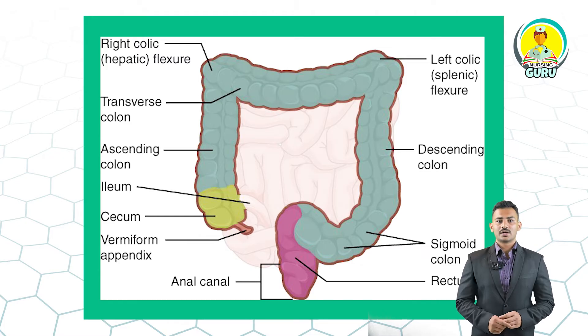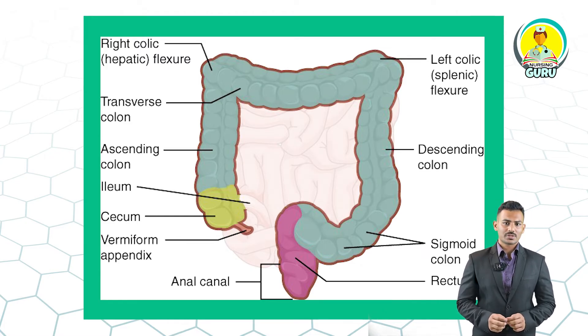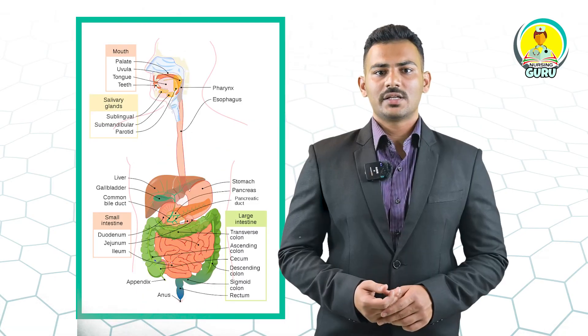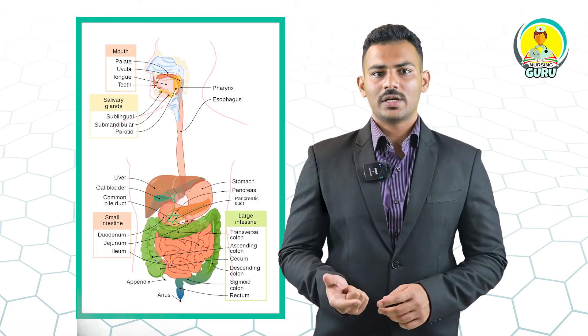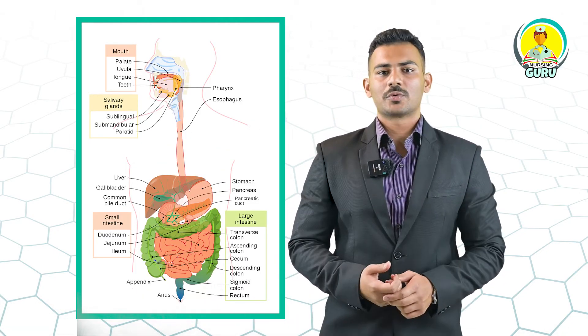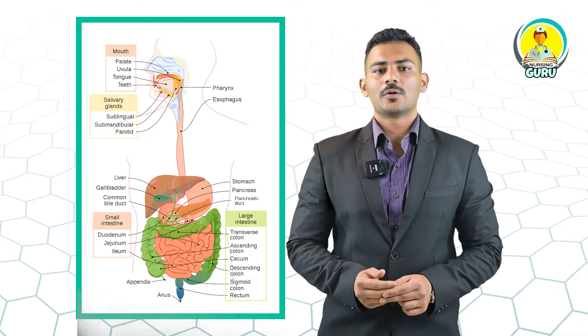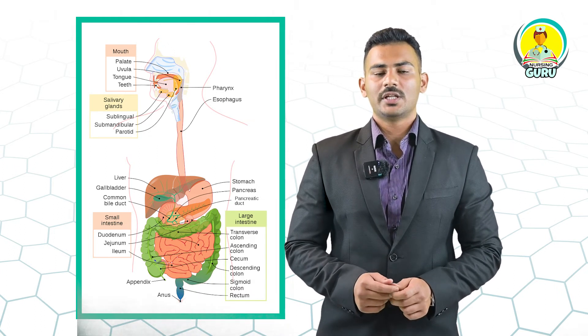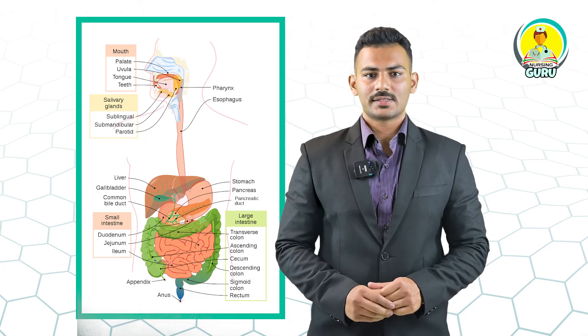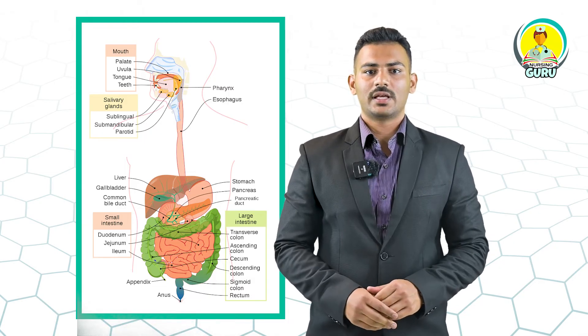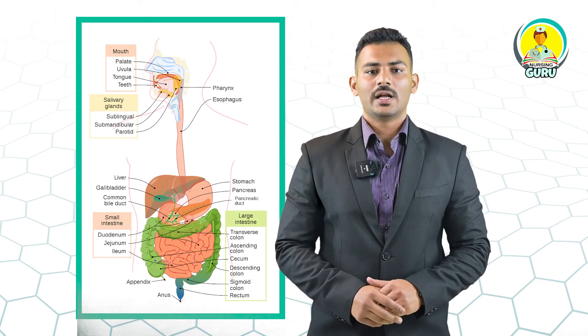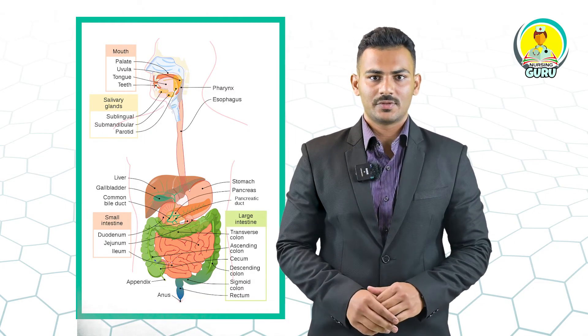Next are the associated glands. These are organs or glands which help in the digestion process but are not part of the digestive tract. These organs secrete fluids into the digestive tract through connected ducts. Accessory glands include the liver, gallbladder, and pancreas. The liver produces bile and the gallbladder stores bile. Bile helps in the absorption of fats. The pancreas secretes enzymes into the small intestine and neutralizes the hydrochloric acid from the stomach.